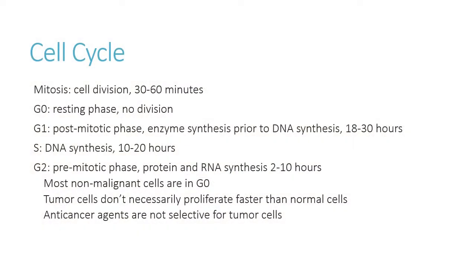Mitosis is usually about a 30 to 60 minute period. G0 is where most normal healthy resting cells are — not actively dividing, just doing their thing. The S phase is where DNA synthesis occurs. G1 is the post-mitotic phase with enzyme and protein synthesis. G2 is the pre-mitotic phase with RNA synthesis. Most non-malignant cells are in G0; most rapidly dividing cancer cells are in one of the active phases. As soon as they finish mitosis, they go right back into it.